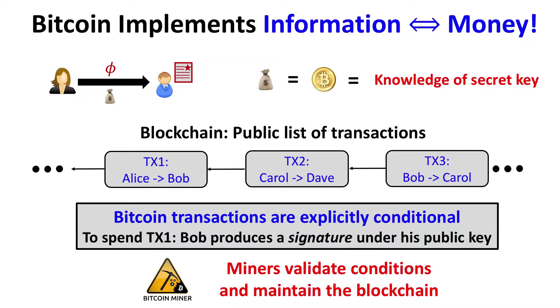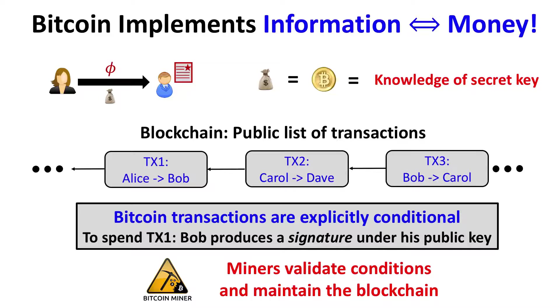The punchline is that Bitcoin implements information-to-money exchange. If you assume that Bitcoin is real money, then Bitcoin makes this information-to-money exchange very explicit: if you have knowledge of the secret key, you own the money associated with the public key. Looking at the blockchain — a public list of transactions — Bitcoin transactions are already explicitly conditional. If Bob wants to spend money sent to him by Alice and send it to Carol, he has to produce a signature under his public key, which only he can do.